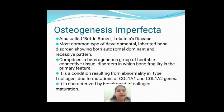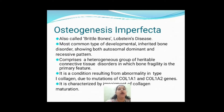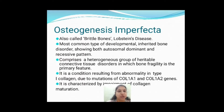What basically happens in osteogenesis imperfecta is that bone is not going to form properly. This is because there is going to be an abnormality in type 1 collagen — there is going to be impairment of collagen maturation. Collagen type 1 is the most predominant connective tissue protein seen throughout the body and is also found abundantly in bone. The genes COL1A1 and COL1A2 code for collagen, and these genes get mutated, causing impairment in collagen maturation and subsequently affecting bone formation.